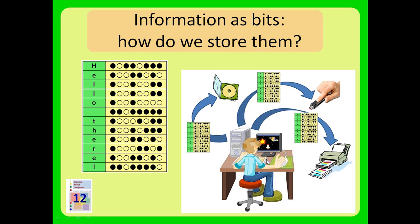At the keyboard, every time a user presses a key, a signal goes from the keyboard into the computer, and the computer associates that signal with one of these 8-bit patterns and stores it in random access memory, which the computer's thinking unit — the central processing unit — uses as a kind of scratch pad.